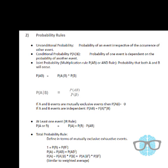Hi, we are going to talk about probability rules. First is unconditional probability, which is the probability of an event irrespective of the occurrence of other events. It's not dependent on any other occurrences.